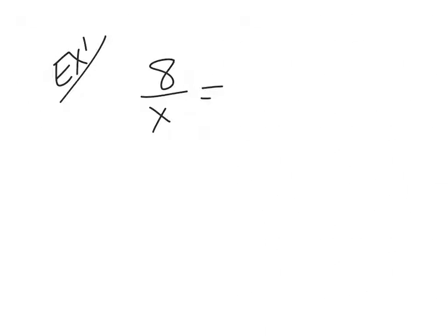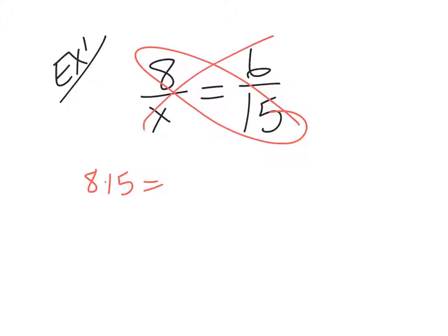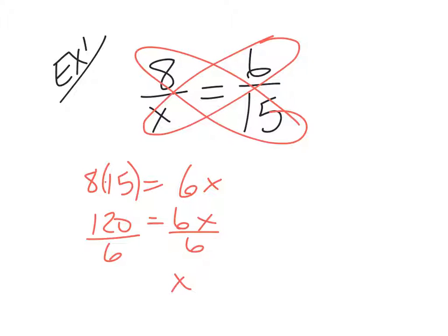So we have 8 over x equals 6 over 15. So a way to write this is you would say 8 times 15 equals 6 times x. So what's 8 times 15? 120. And then how do I solve for x? You just divide the 6 out. So x equals, what's 120 divided by 6? 20.